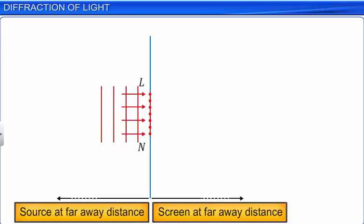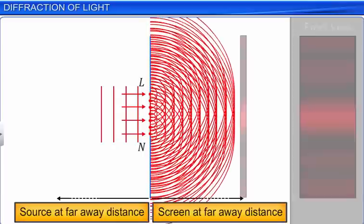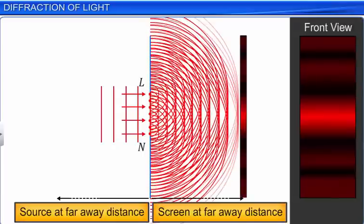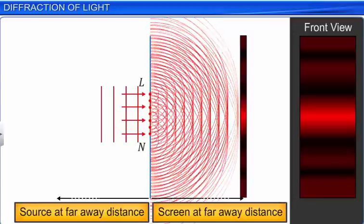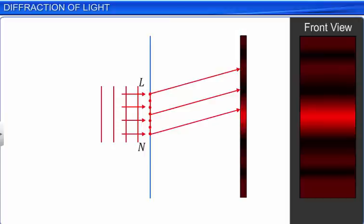According to Huygens' principle, every point on the wavefront acts as a source of secondary wavelets that spread out in all directions with a speed equal to the speed of propagation of the wave. Consequently, we find many microscopic point sources of light between L and N which produce secondary wavelets. The diffraction fringes formed on the screen are due to the interference of these secondary wavelets produced by a large number of point sources. Since the screen is at a far away distance, we can regard the rays as parallel. The diffraction formed in such conditions is known as Fraunhofer diffraction.